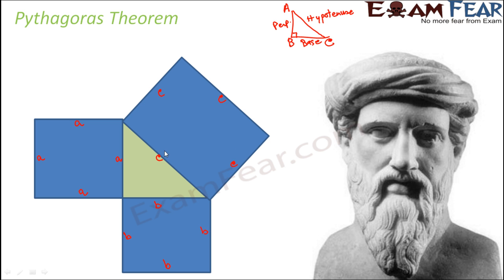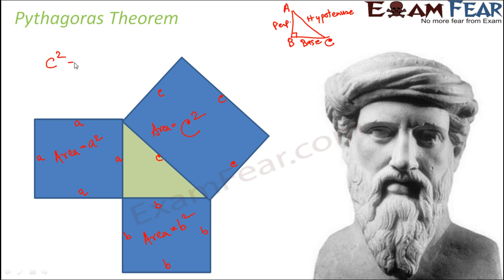As per this theorem, the area of the square on the hypotenuse is C squared — because area of a square is side times side. The area of the square on the base is B squared, and the area of the square on the perpendicular is A squared. So according to Pythagoras theorem, C² = A² + B²; that is, the area of the square drawn on the hypotenuse equals the sum of the areas of the squares drawn on the perpendicular and the base. This was the Pythagoras theorem.